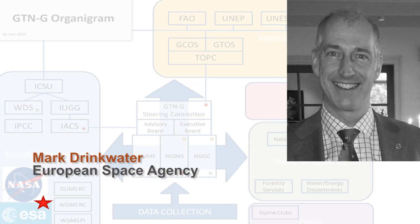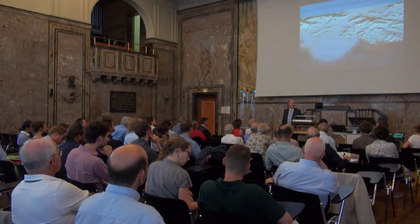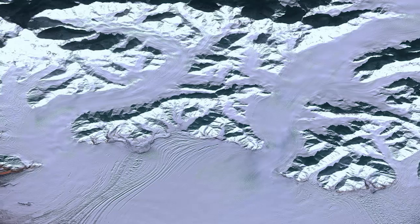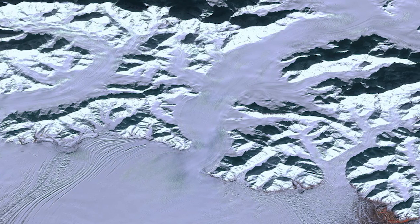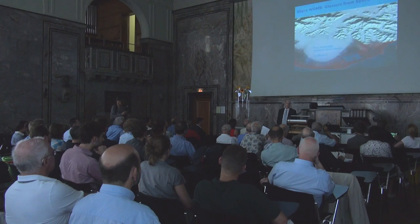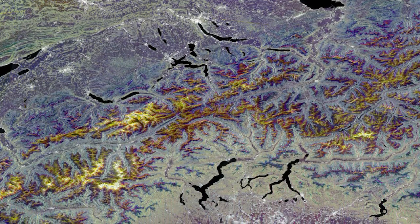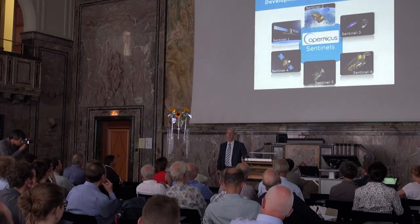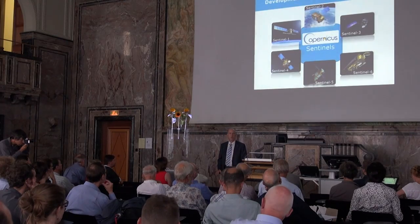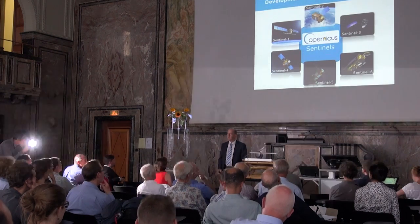Glaciers today are recognized as being of critical societal relevance and represent a dwindling resource of water. This affects billions of people, particularly in Southeast Asia. The satellite perspective on how glaciers are changing the world over is a unique resource which can be fed into the World Glacier Monitoring Service's activities to provide a unique dataset spanning periods of decades.